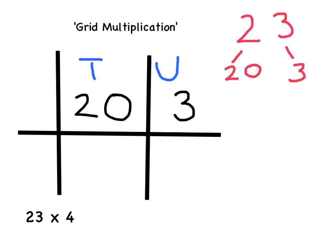The operation we are doing goes in this box here. In this question we are doing 23 multiplied by 4. So a cross goes in this box to show we are multiplying, and 4 goes here to show we are multiplying by 4.